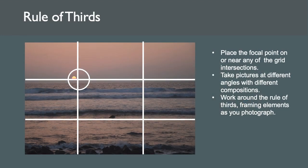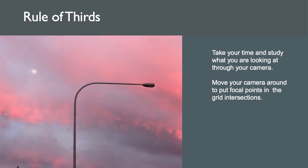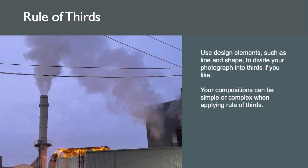For the rule of thirds, place the focal point — which is your subject matter or area of interest — on any of the grid intersections. Take pictures at different angles with different compositions. Work around the rule of thirds, framing elements as you photograph. The rule of thirds strategy will carry with you all the way through the rest of the class. Take your time and study what you're looking at through your camera. Move your camera around to put focal points in the grid intersections. Use design elements such as line and shape to divide your photograph into thirds if you like.